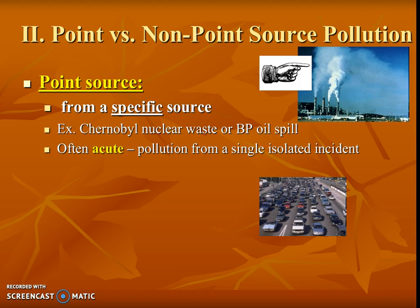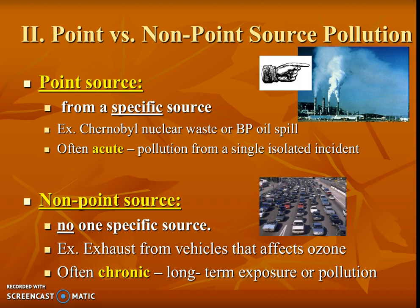Sometimes these things, unfortunately, can pollute more than one time. We also have the category called non-point source pollution. There's no one particular source. Notice that car exhaust pollution coming out of vehicles will affect ozone, and it's not like we can point to one particular vehicle. This is a lot harder to regulate, even though we try by getting our car emissions checked. Another great example of non-point source is fertilizer or pesticide pollution — it's hard to figure out whose lawn or farm it's coming off of. These often cause chronic pollution because it's long-term, since it's harder to identify and harder to regulate.